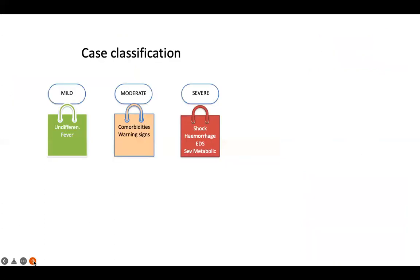Dengue can be classified as mild, moderate, or severe. Mild dengue is like an undifferentiated viral fever — nothing specific. Moderate dengue occurs in patients with comorbidities such as hypertension, diabetes, immunodeficiency, or any chronic disease, where there is a higher chance of complications.